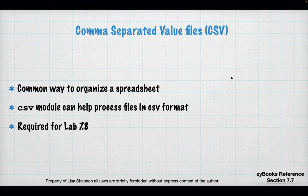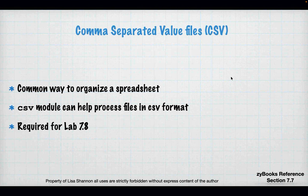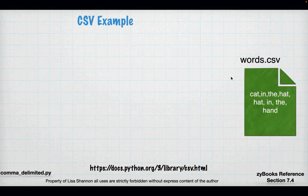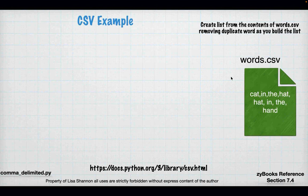And comma-separated value files — why do you need to know about comma-separated value files? Because they're the way spreadsheets are organized, but mostly because you're required to do this for lab 7.8. And I know that the labs are like mini-projects. So I know there's a lot going on this week. There's a file out there called comma-delimited.py which might be helpful. And what all comma-delimited does is it breaks up your file by commas.